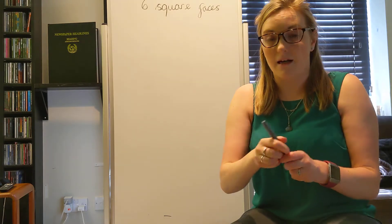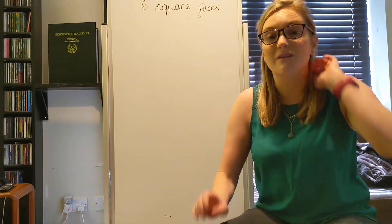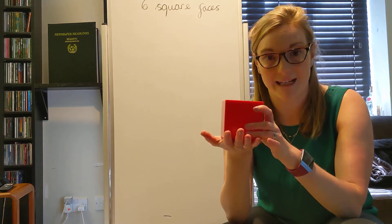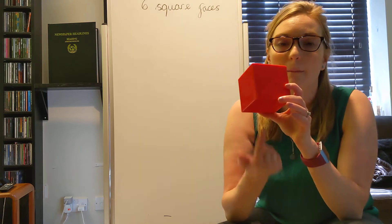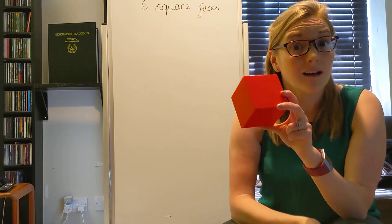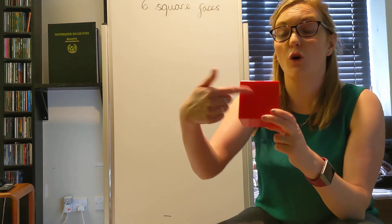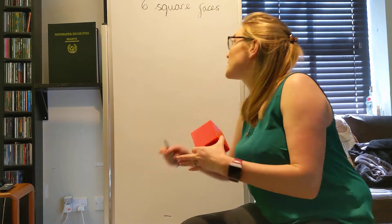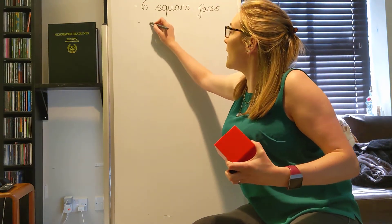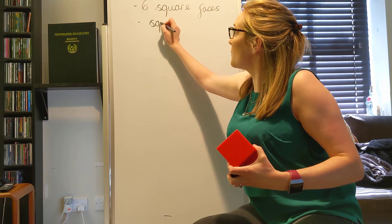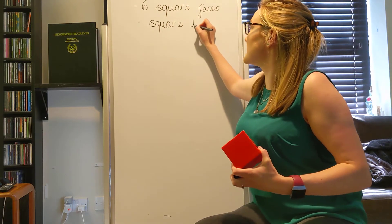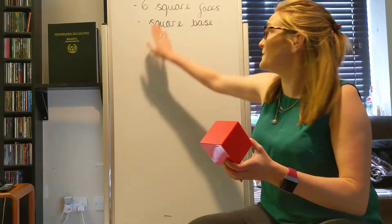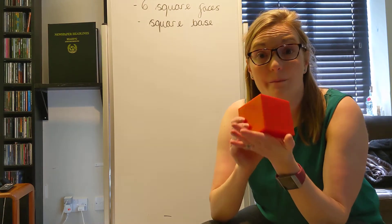And if you remember yesterday we were talking about some of the features of 3D shapes and we said that the bottom of a 3D shape is called the base. So what do you think the base of this 3D shape would be? Well done. It would have to be a square, wouldn't it? Because all of the faces on the cube is a square. So we can put here square base.